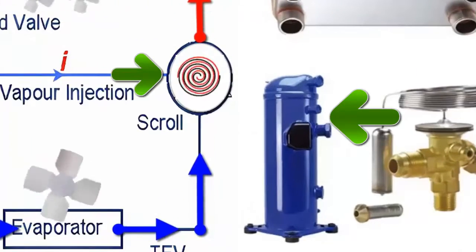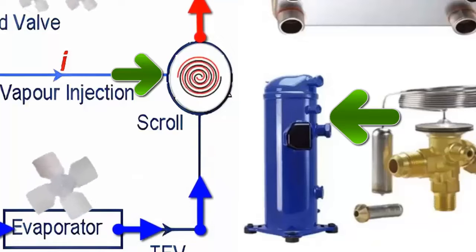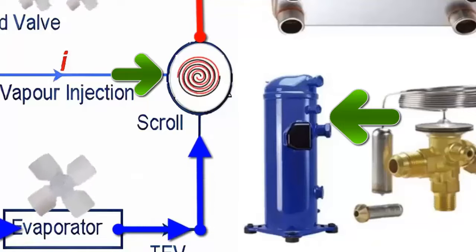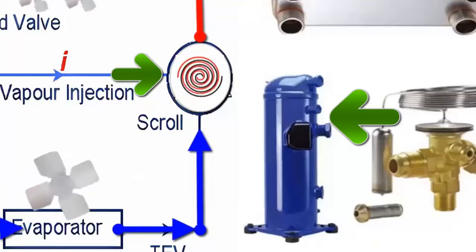Scroll compressors with vapor injection are designed with an independent connection from the compressor suction and discharge ports, which allows the economizer to operate.